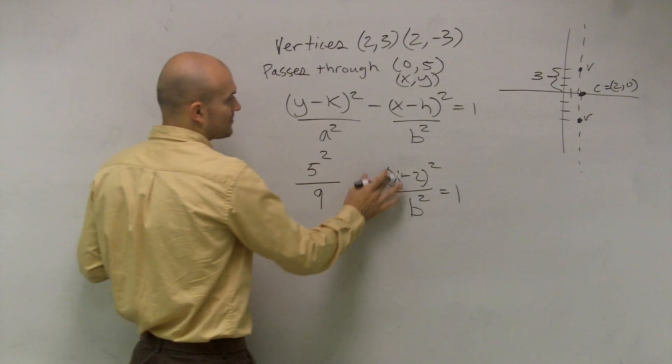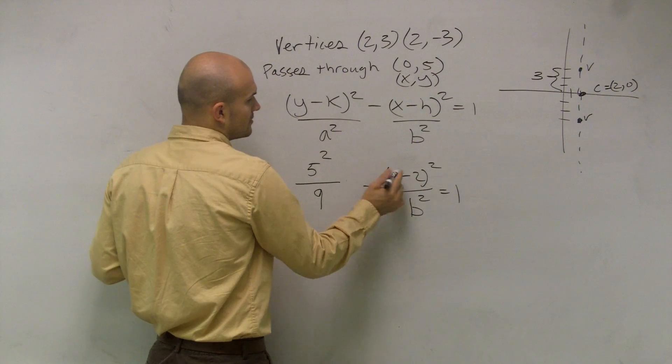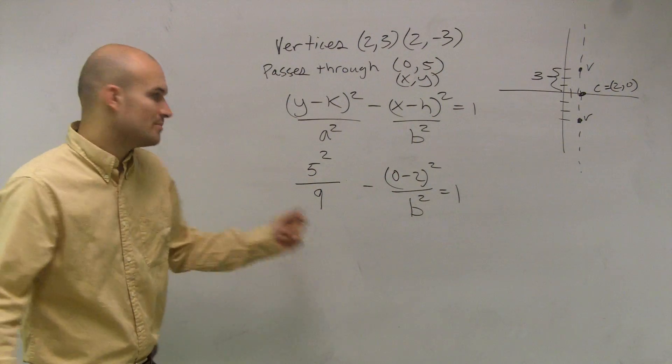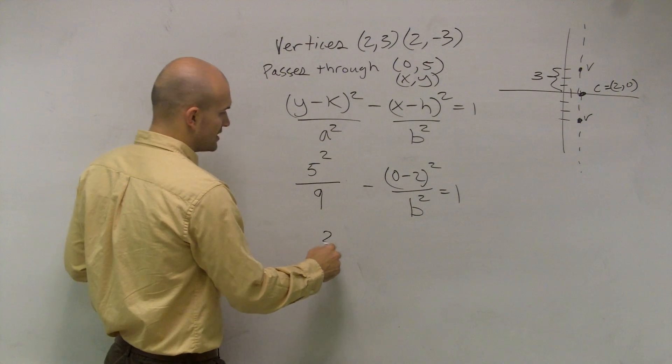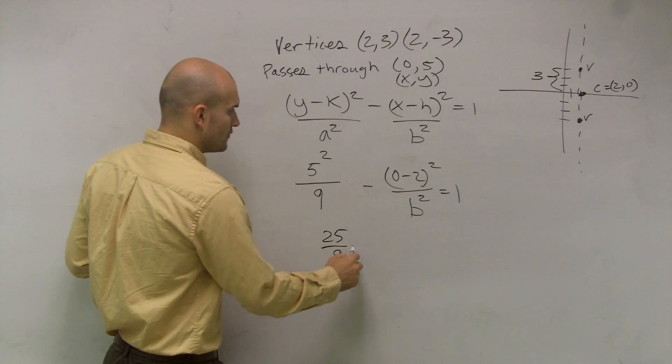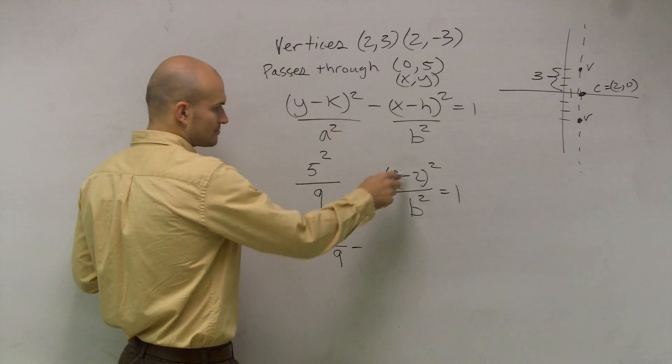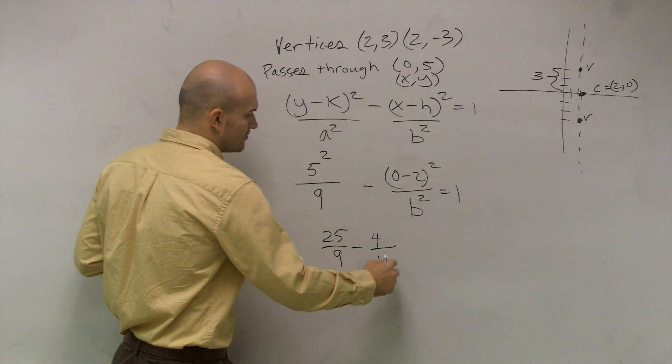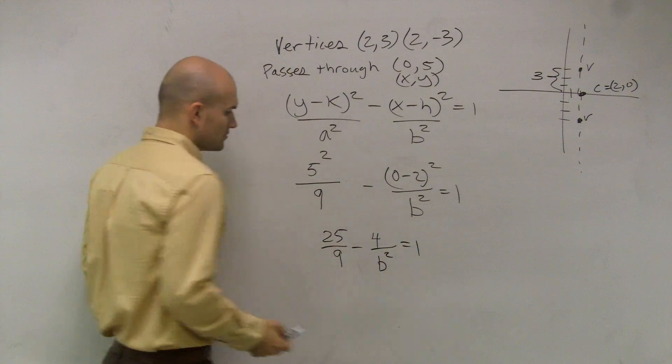So I can write this is going to be 5, and this is going to be 0. So I can use that information now to solve for b squared. So 5 squared is going to give me 25 over 9 minus negative 2 squared, which is going to give me a positive 4, over b squared equals 1.